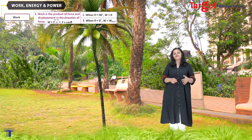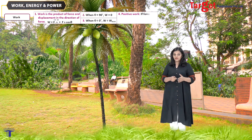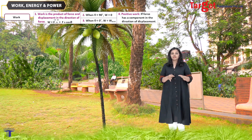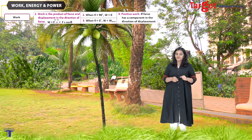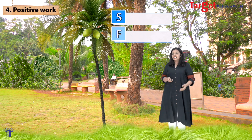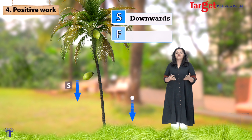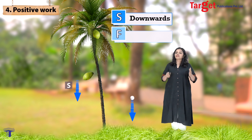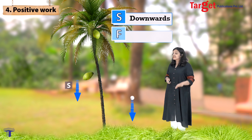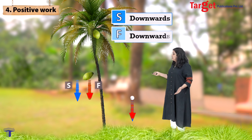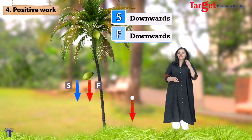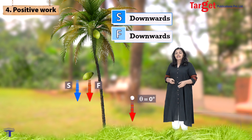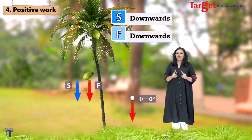From this formula, we have three different types of work. The first one is positive work. By definition, positive work means when force has a component in the direction of displacement. Look at this coconut tree — this coconut is falling in the downward direction, so the displacement is downward. The gravitational force acting on this coconut is also acting in the downward direction, meaning the angle between the force and displacement is 0. Force is in the direction of displacement, and this is an example of positive work.